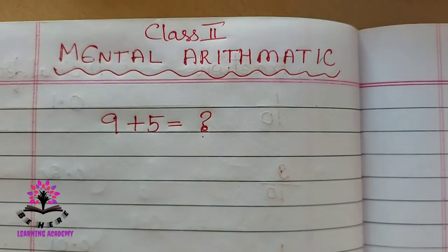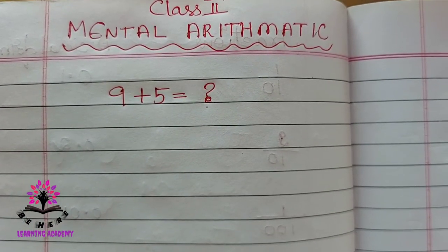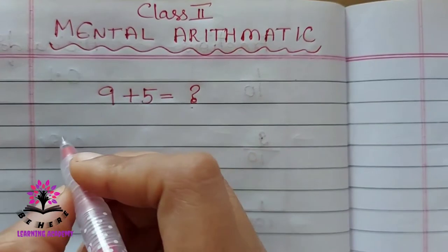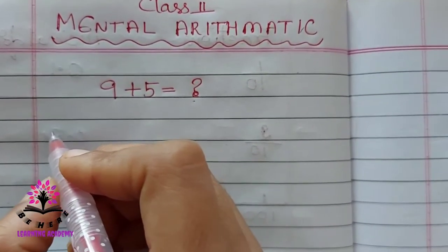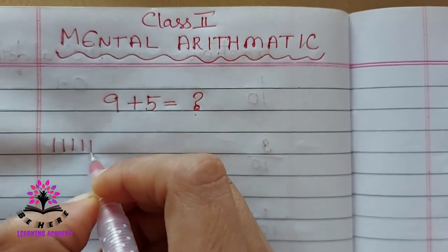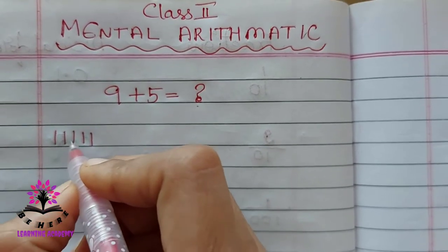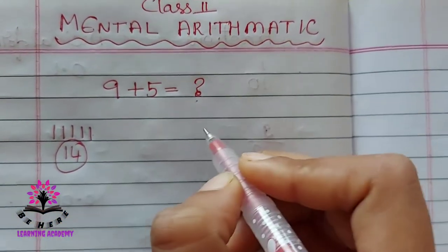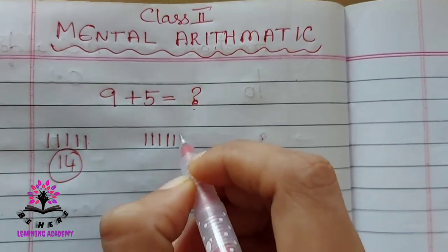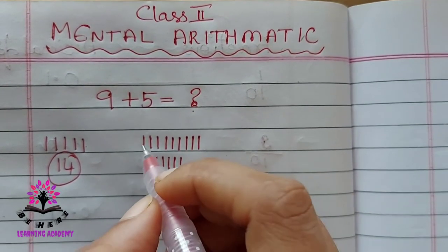Nine plus five is equal to how much? You have to solve this problem mentally. You can keep nine in your mind and count five more: ten, eleven, twelve, thirteen, fourteen. Some of you will add it this way — first you draw nine lines, then you draw five lines, then you add them all up.